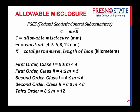The Federal Geodetic Control Subcommittee came up with a different way to do this. Instead of basing it on the number of setups, this method bases everything on distance. C, the allowable misclosure in millimeters, uses constants of 4, 5, 6, 8, and 12 millimeters. K is the total perimeter or length of the loop in kilometers.